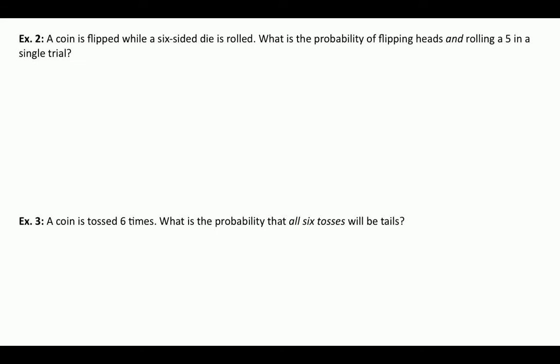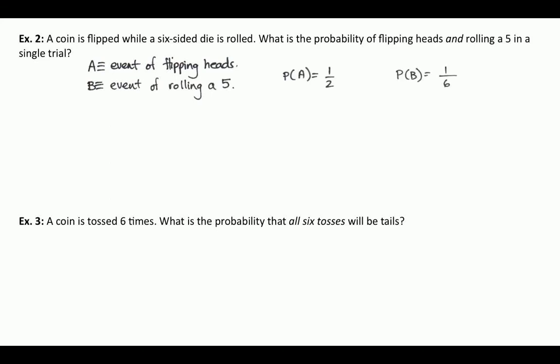Here's an example. A coin is flipped while a six-sided die is rolled. What's the probability of flipping heads and rolling a five in one single trial? We ask ourselves: if we flip the coin and roll the die, is there any way the coin's outcome affects the die? No — so these are independent and we can use the formula P(A and B) = P(A) × P(B). Let event A be flipping heads and event B be rolling a five. P(A) = 1/2, P(B) = 1/6, so P(A and B) = 1/2 × 1/6 = 1/12.